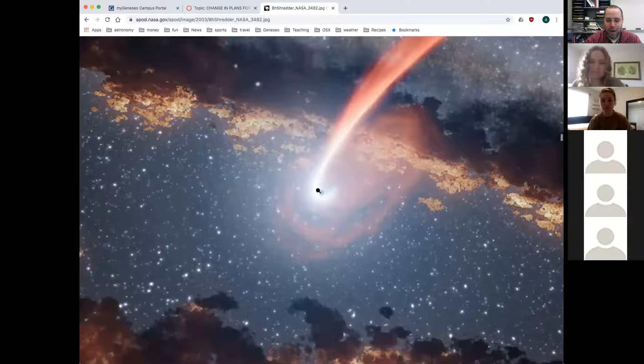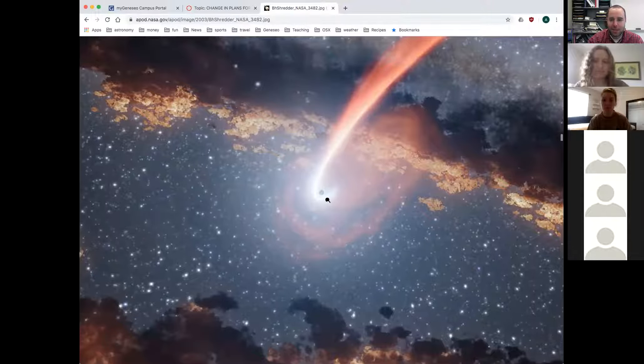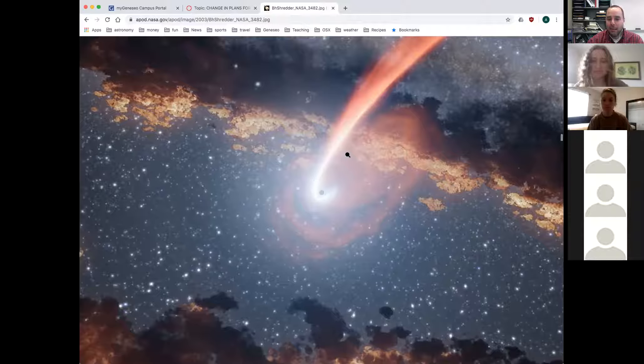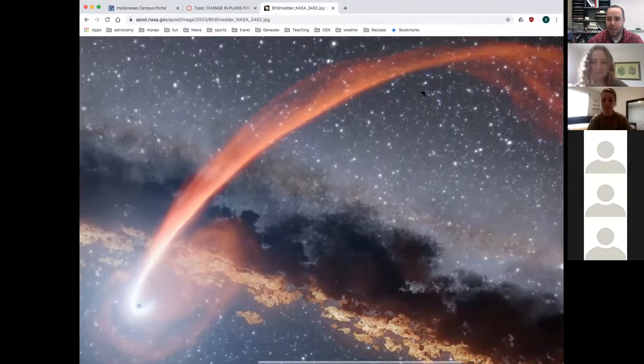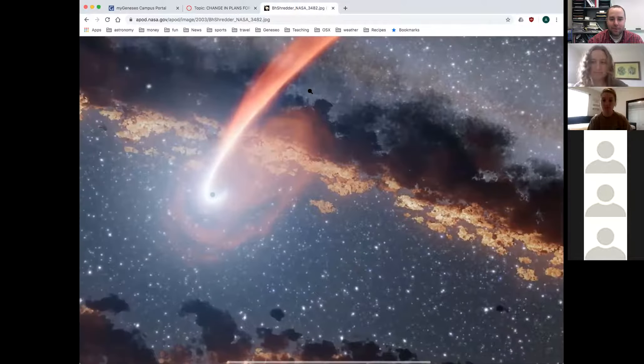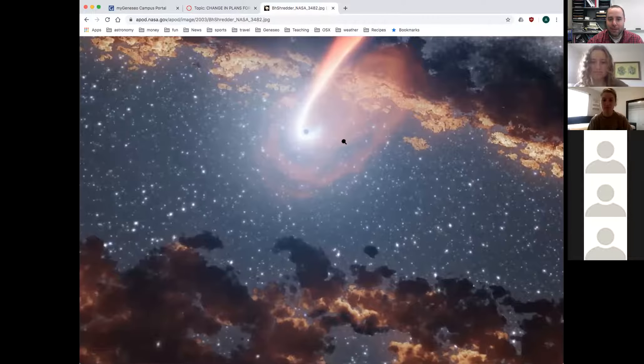So the star hasn't fallen directly into the black hole. If it did, it would just sort of disappear. It has a small amount of angular momentum that takes it around the black hole. It's entering a very elliptical orbit around the black hole. But the tidal forces, we haven't talked about that, that's the difference in force between one side of an object and the other becomes so big near a black hole that the thing actually gets ripped apart.